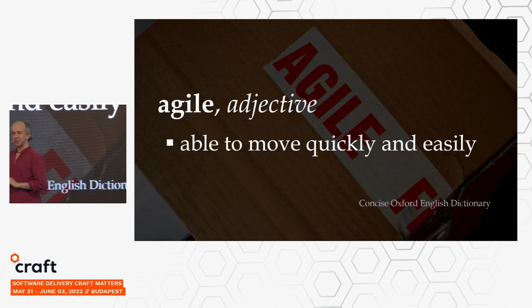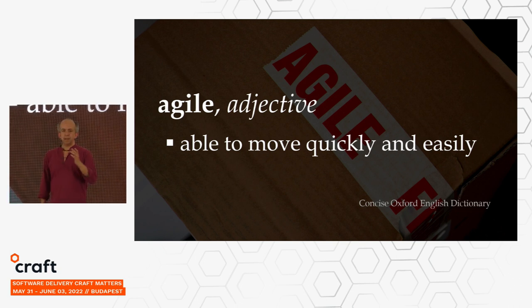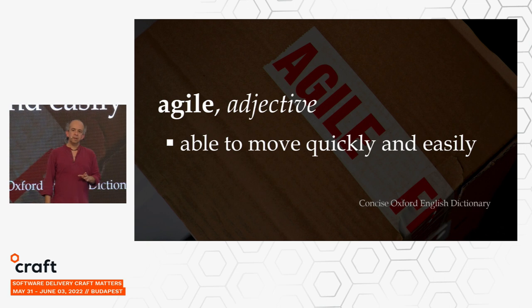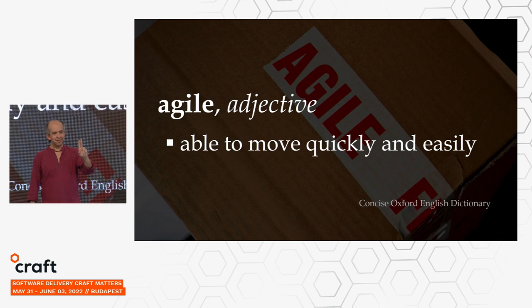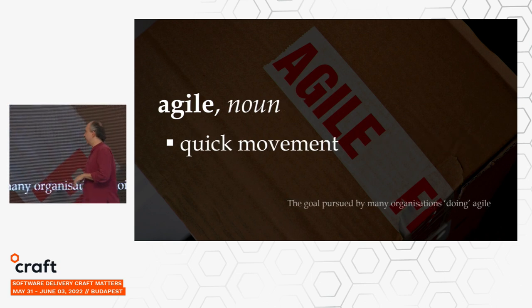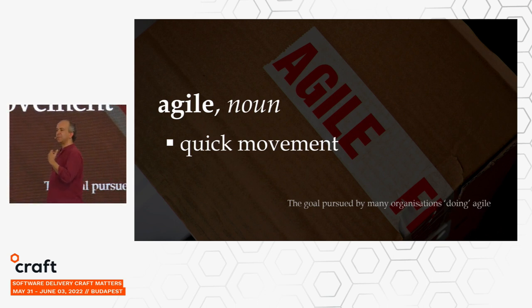There are lots of definitions of agility around, but I'm going to go to the dictionary to find one, because the dictionary tends to have less hype. The dictionary does not sell you certification. Their definition of agility is not bound up with somebody's revenue stream for consultancy. The Oxford English Dictionary says: 'able to move quickly and easily.' There are two ideas here, but people find two really difficult — we end up with just quick movement.